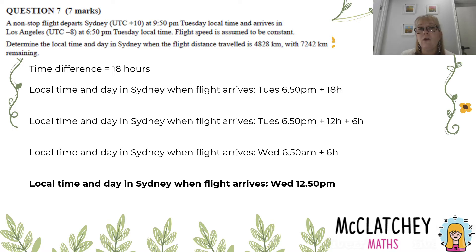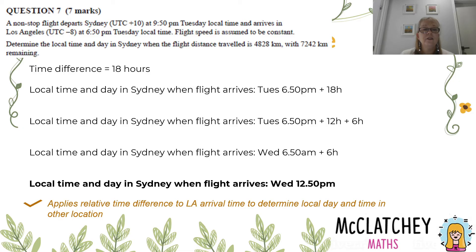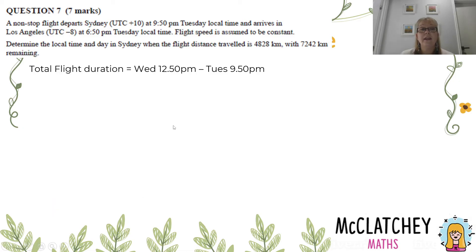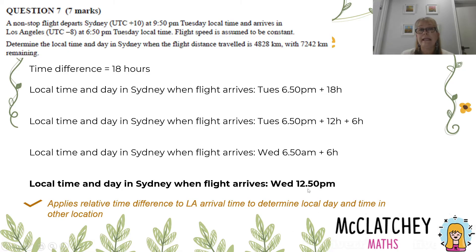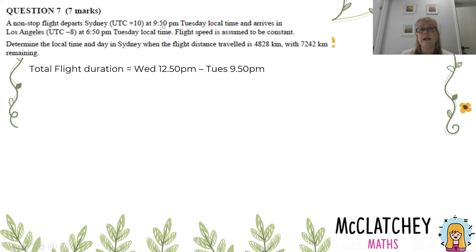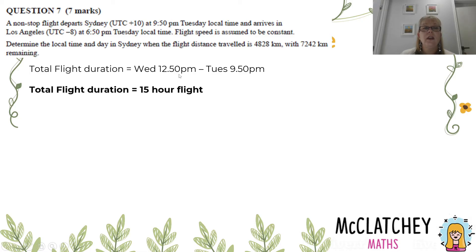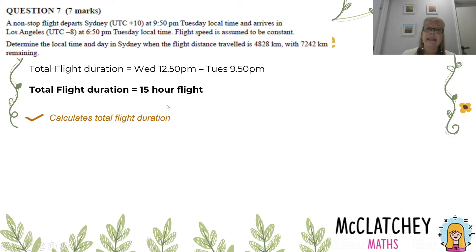What I'm trying to do is work out how long the flight is, and I get another mark for that. The flight arrived at Wednesday 12:50 pm Sydney time, minus the Sydney departure time of Tuesday 9:50 pm. Working from Sydney time throughout: going backwards from 12:50 pm to 9:50 pm the night before gives 12 hours plus 3 hours, making a 15-hour flight. I get another mark for working out the flight duration.